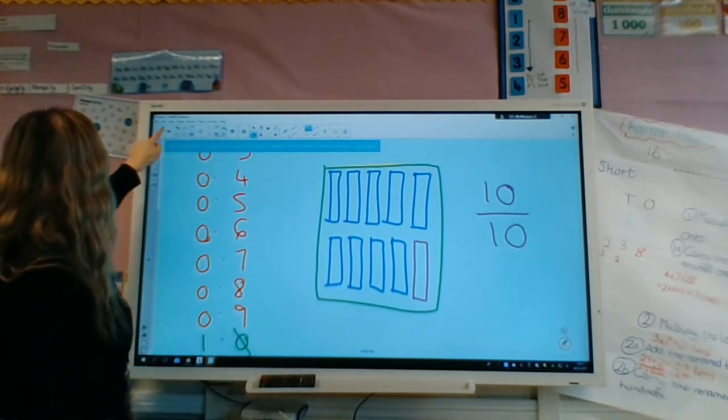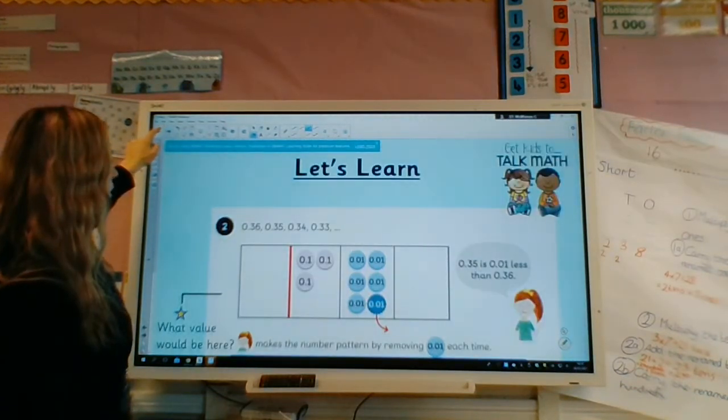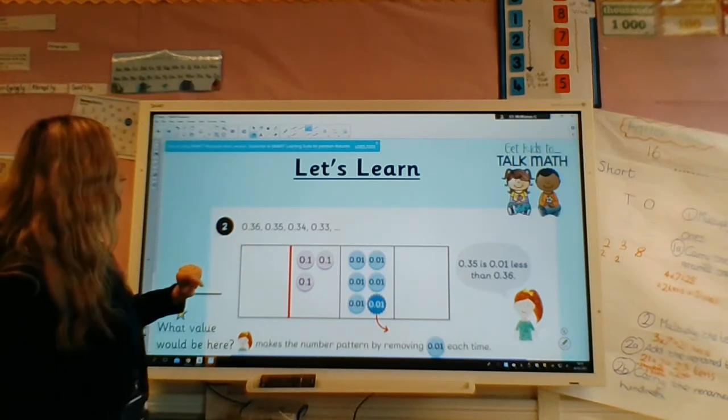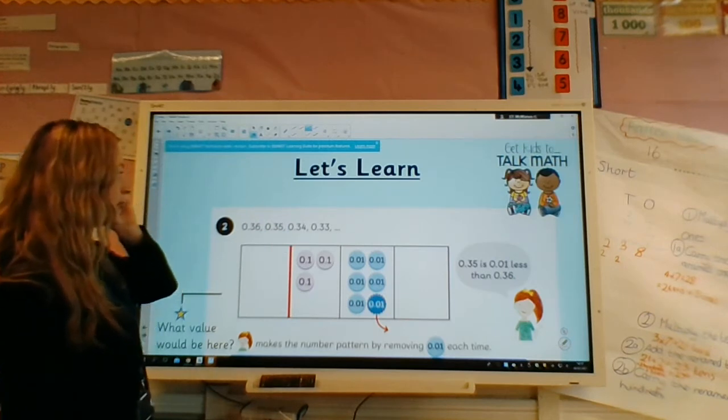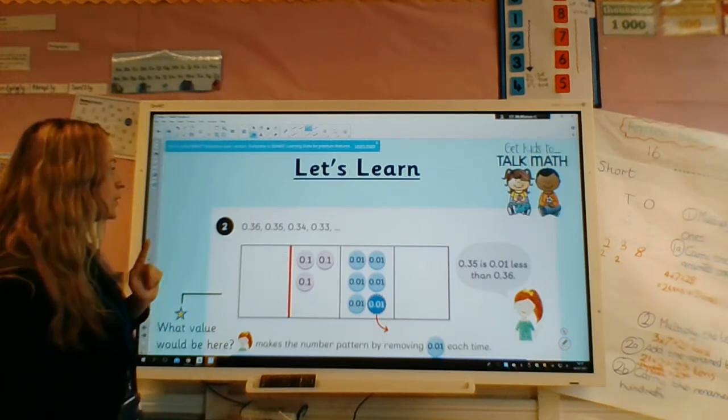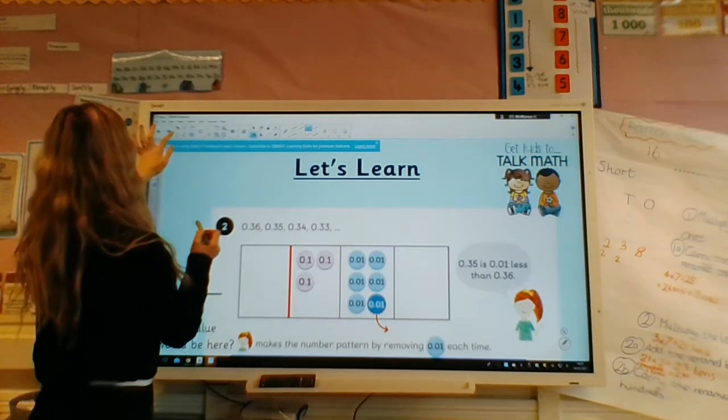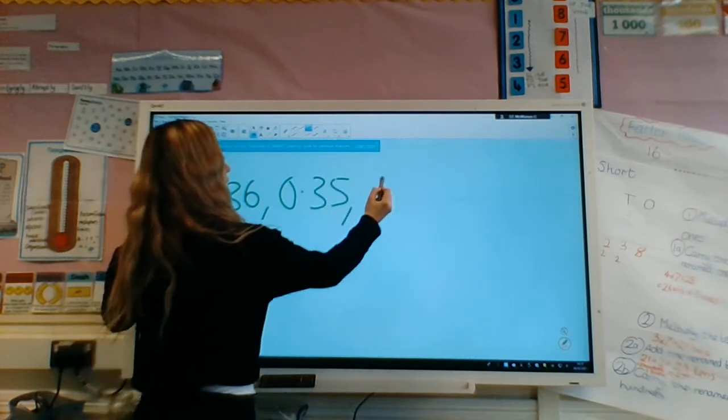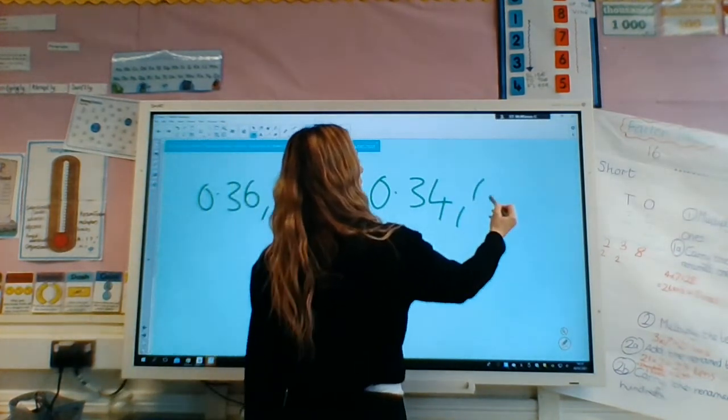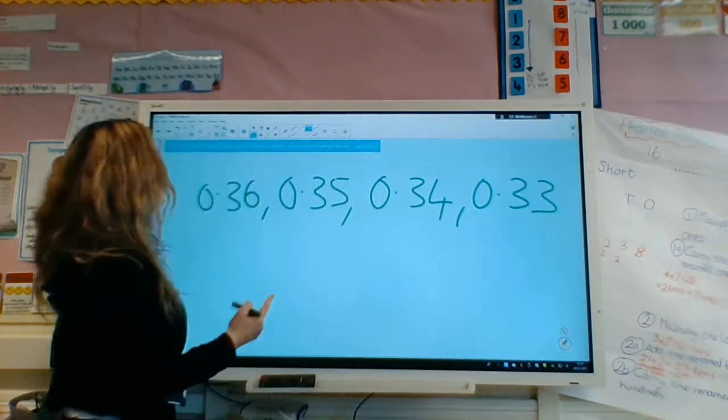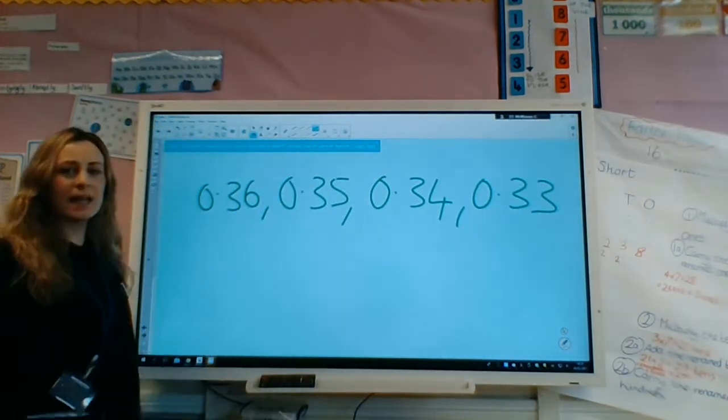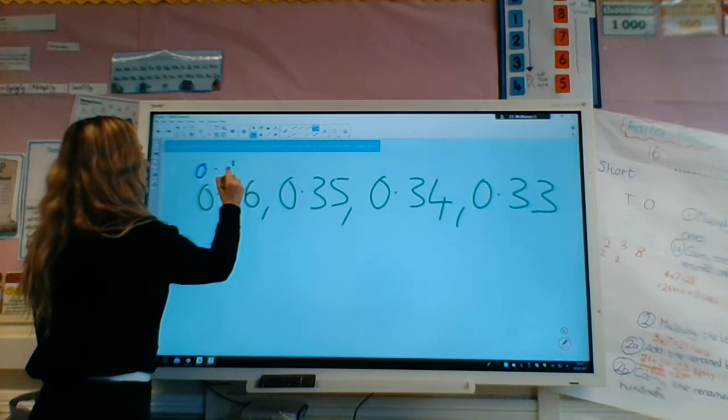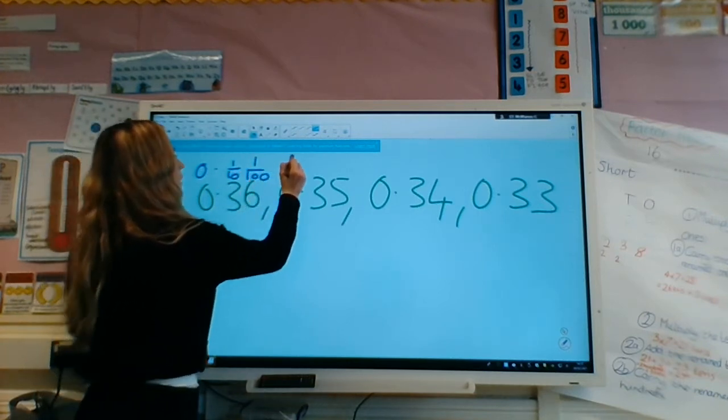And then what would come afterwards, so let's just look in this pattern. We've got 0.36, 0.35, 0.34, 0.33. So what we're doing is, let's just draw it on the board. We've got 0.36, 0.35, 0.34, 0.33. We're going down, like we're taking something away.